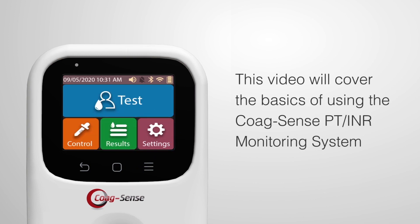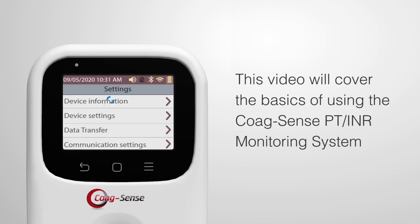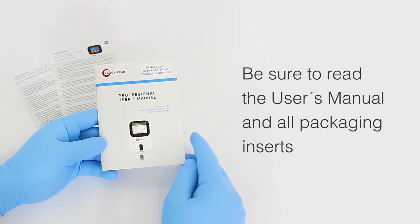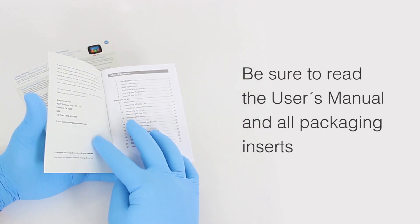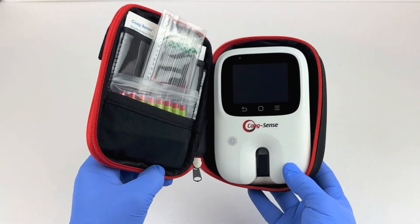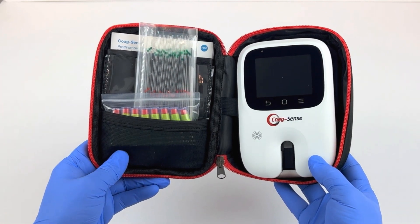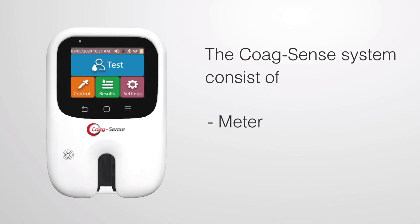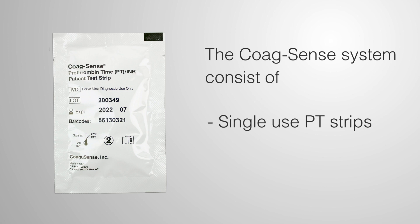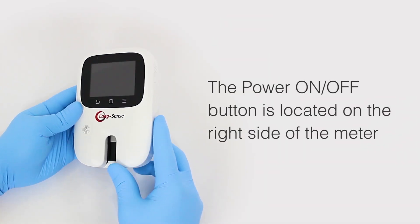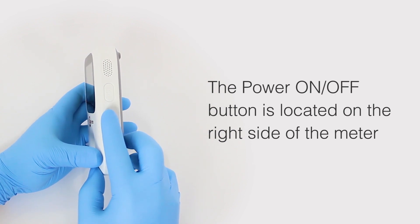This video will cover the basics of using the CoagSense PT-INR Monitoring System. For complete instructions, please be sure to read the user manual and all packaging inserts. Everything you need is provided in the kit, delivered in a carrying case, which includes the meter, lancets, single-use PT strips, control strips, sample transfer tubes, and certain accessories required for testing.